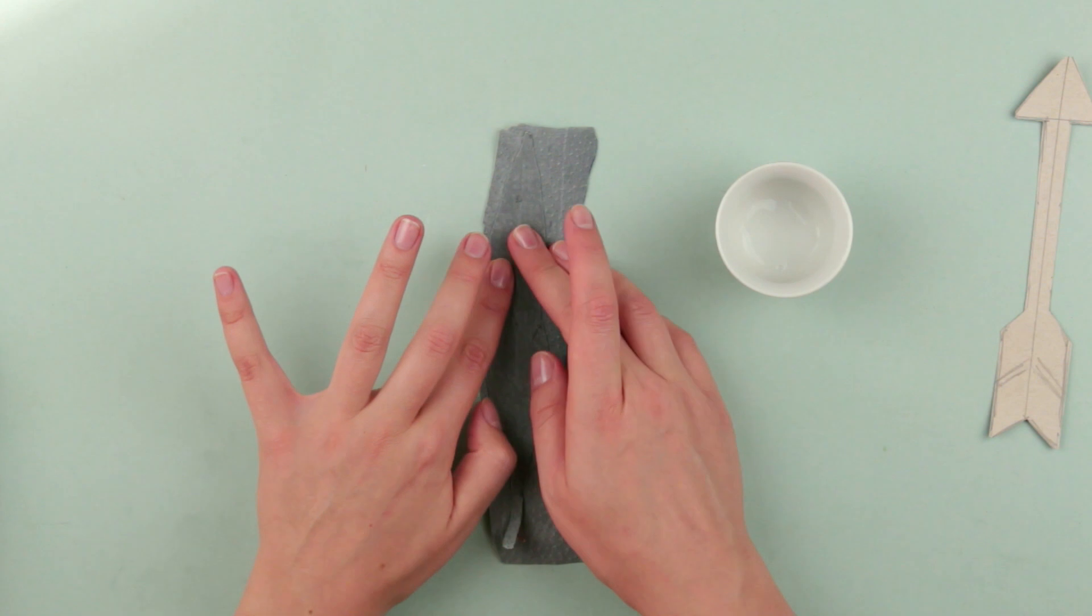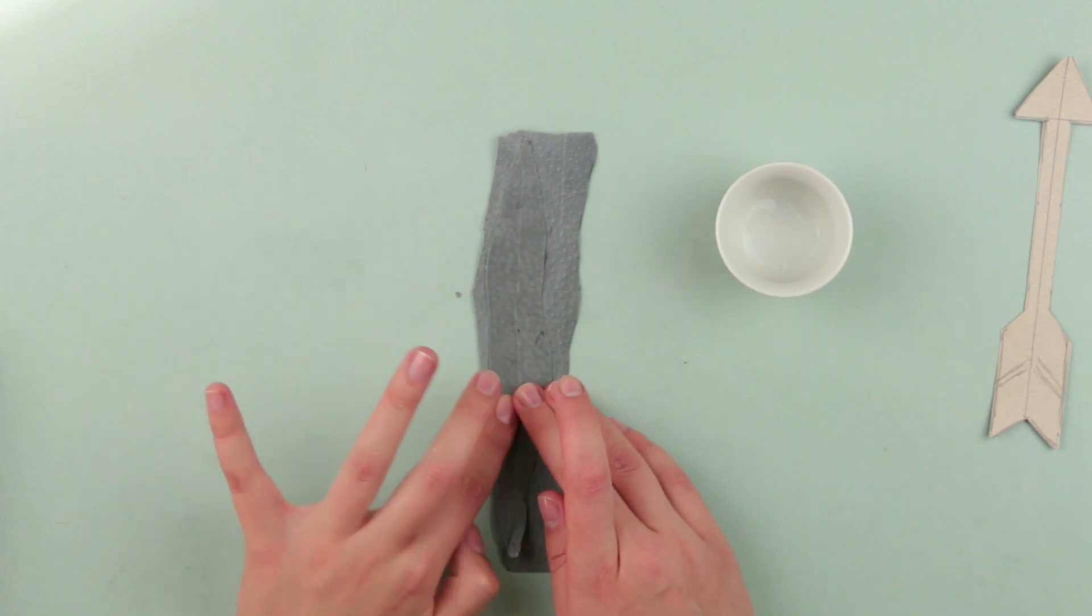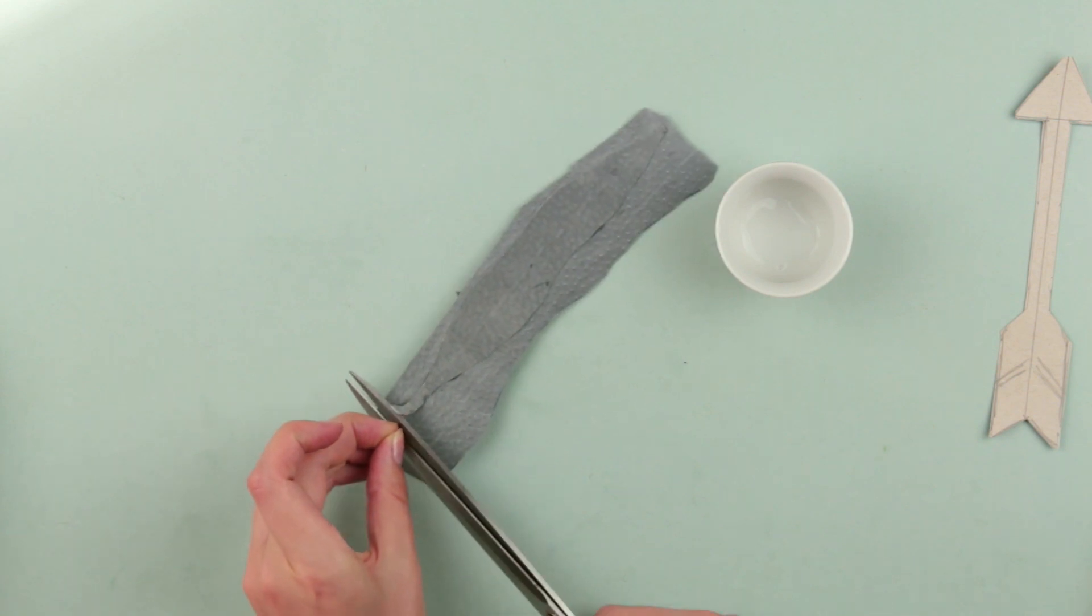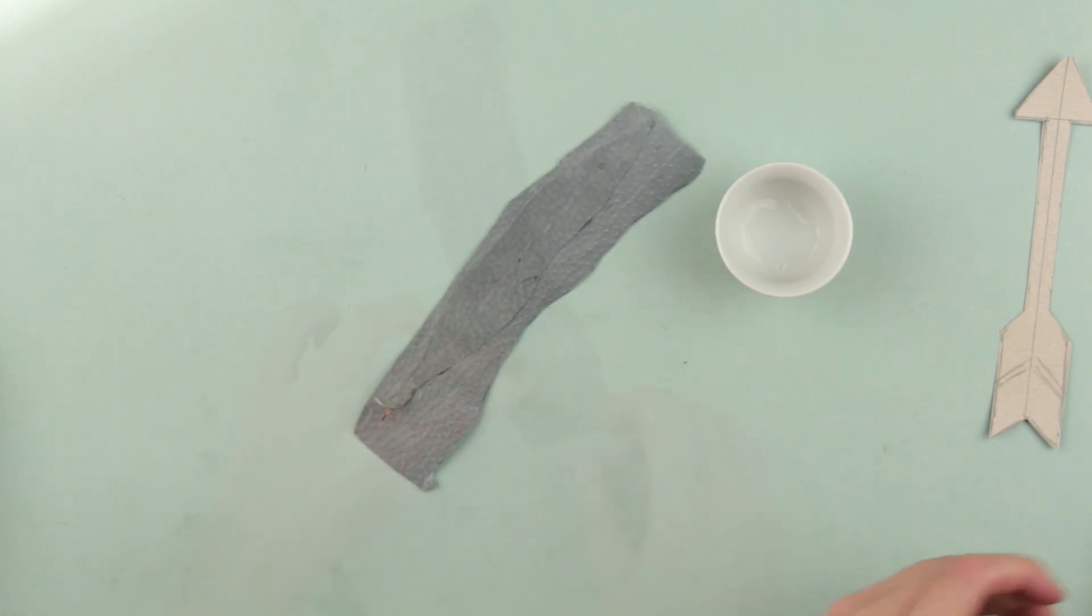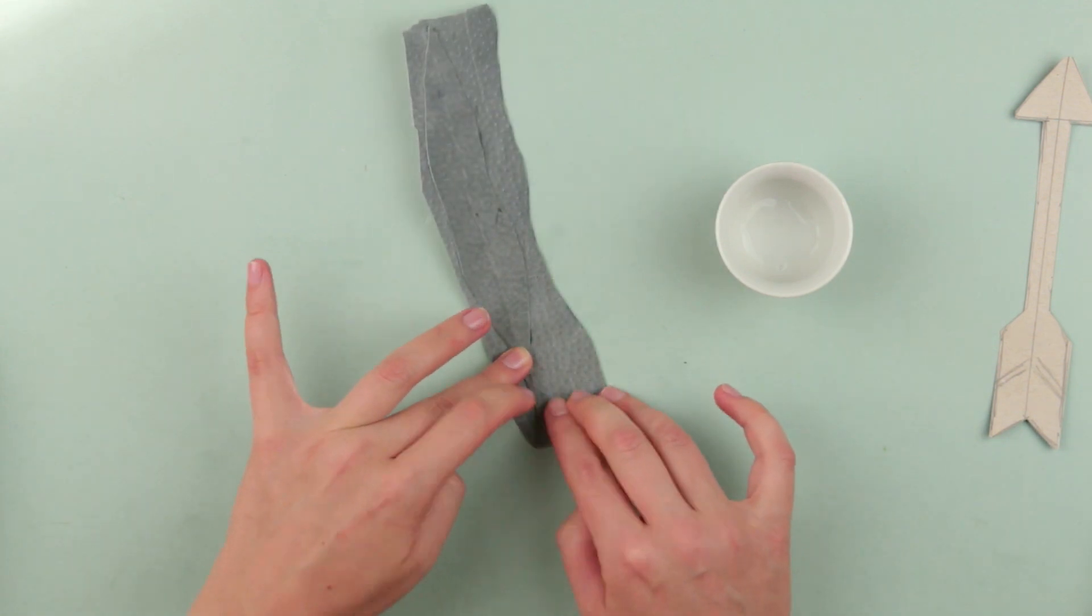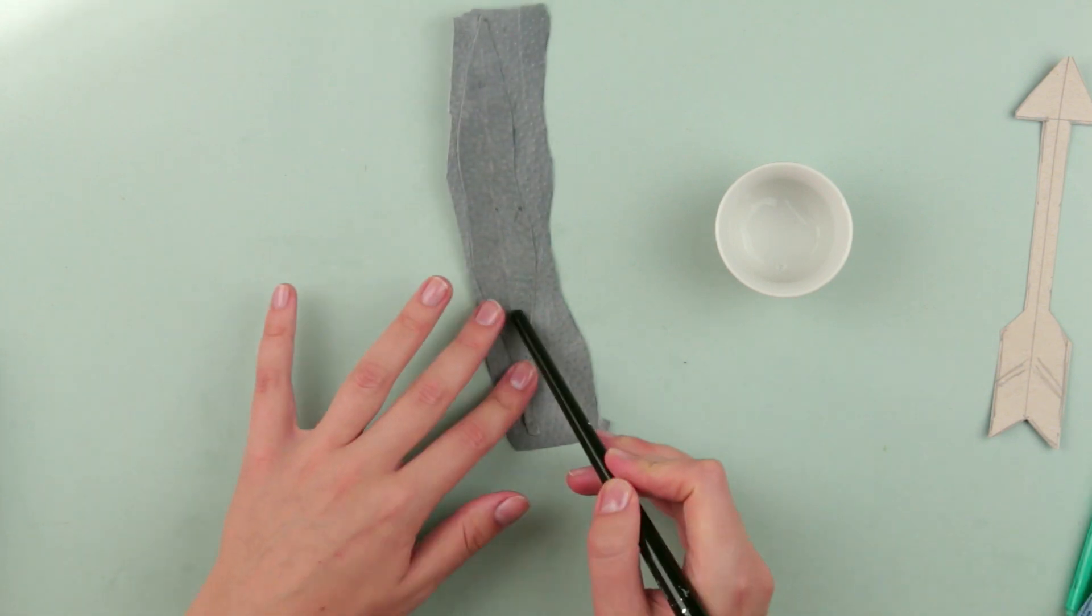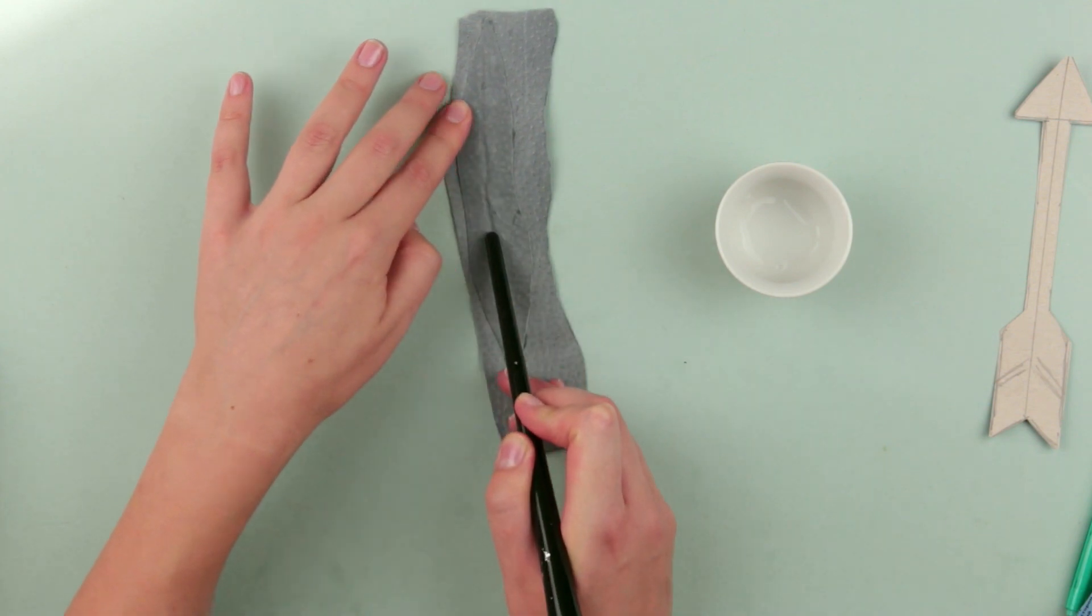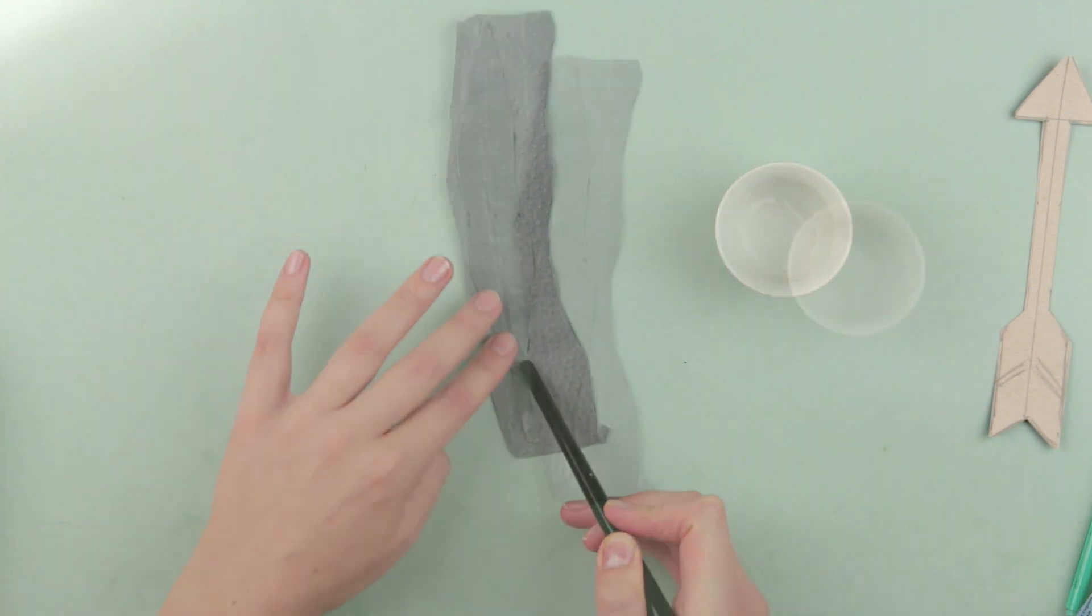Continue pressing over for a better attachment. Cut off the excess wire to prevent it sticking out. Smooth the surface with a round brush handle end. Let it dry.